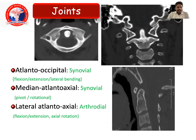When it comes to the joints, the atlanto-occipital joint is a synovial joint where flexion, extension, and lateral bending can be demonstrated. The median atlanto-axial joint is also a synovial joint, mainly for pivotal and rotational movements. The lateral atlanto-axial joint is an arthrodial joint where flexion, extension, and axial rotation can also be performed.